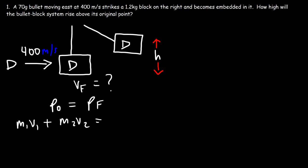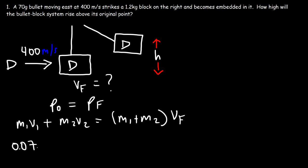The initial momentum is the momentum of the bullet plus the momentum of the block, and that equals the final momentum. Since the two stick together, they move at the same final speed vf, giving us (m1 + m2) × vf. m1, the mass of the bullet, is 70 grams divided by 1000, which is 0.07 kilograms. v1 is 400, m2 is 1.2, and the block was initially at rest so v2 is zero. m1 plus m2 is 0.07 plus 1.2, giving a total mass of 1.27 kilograms.